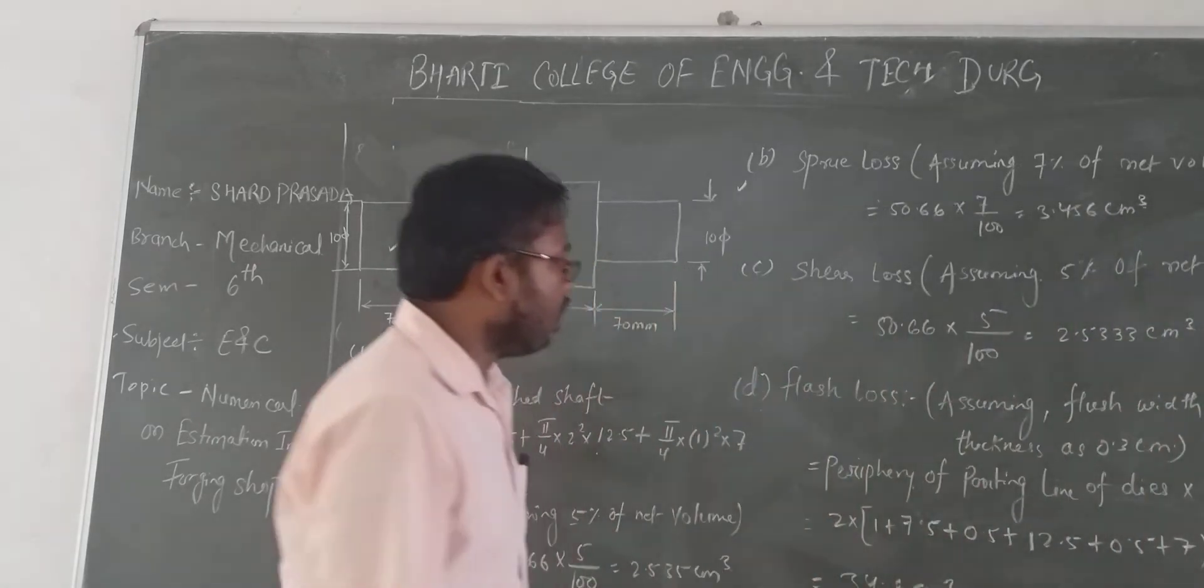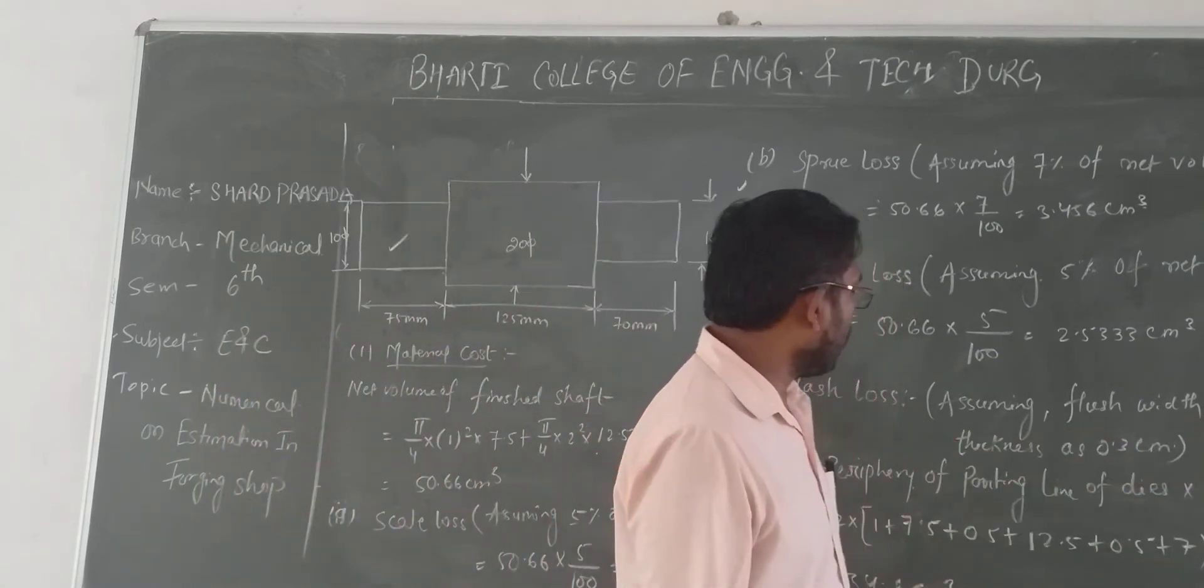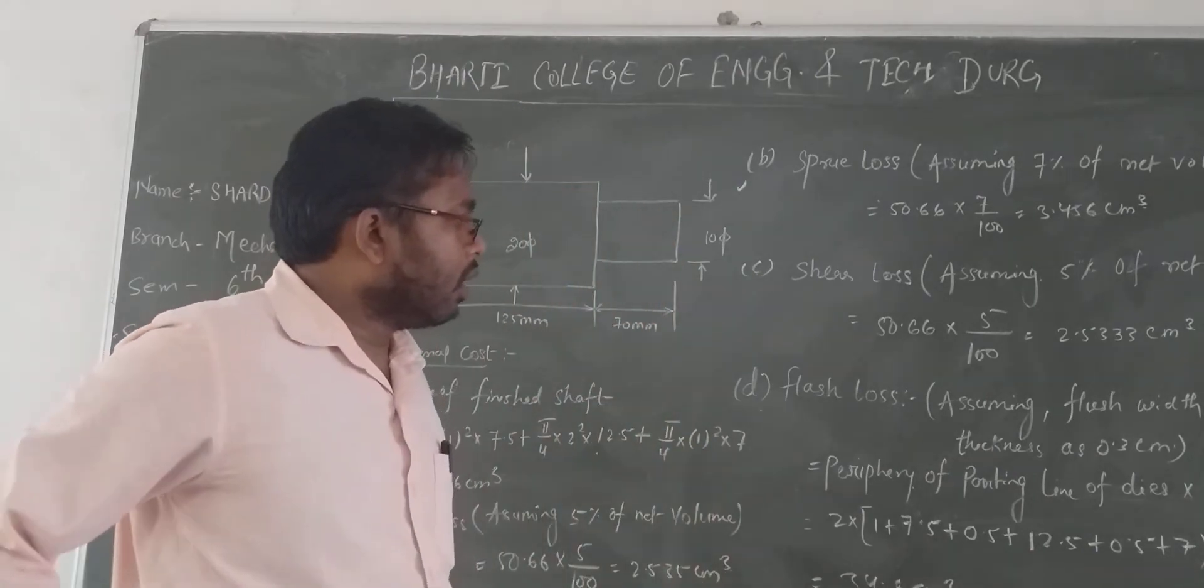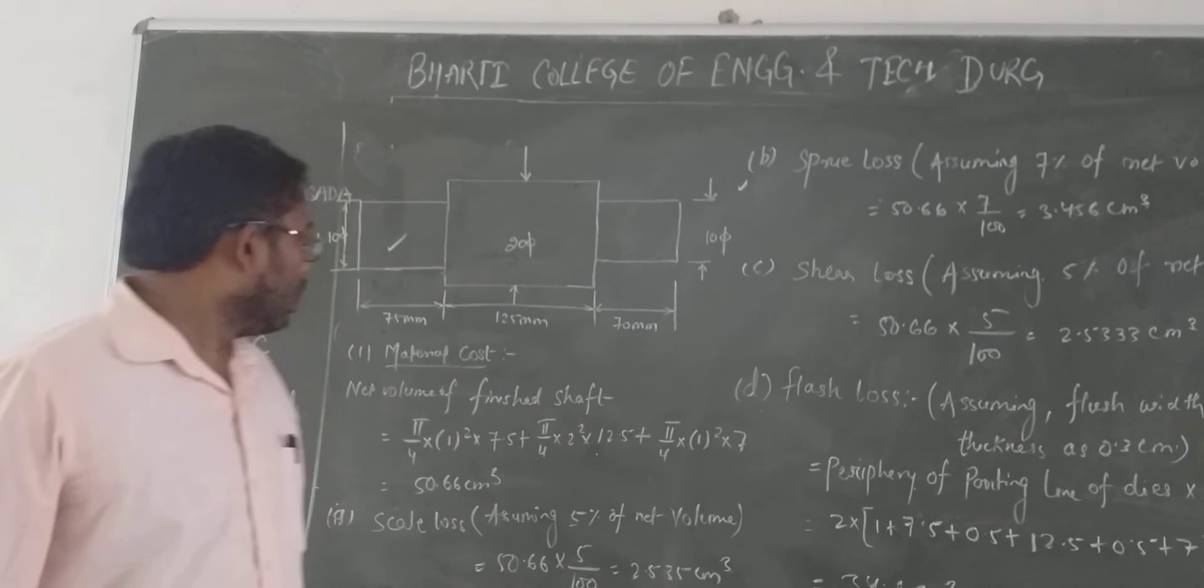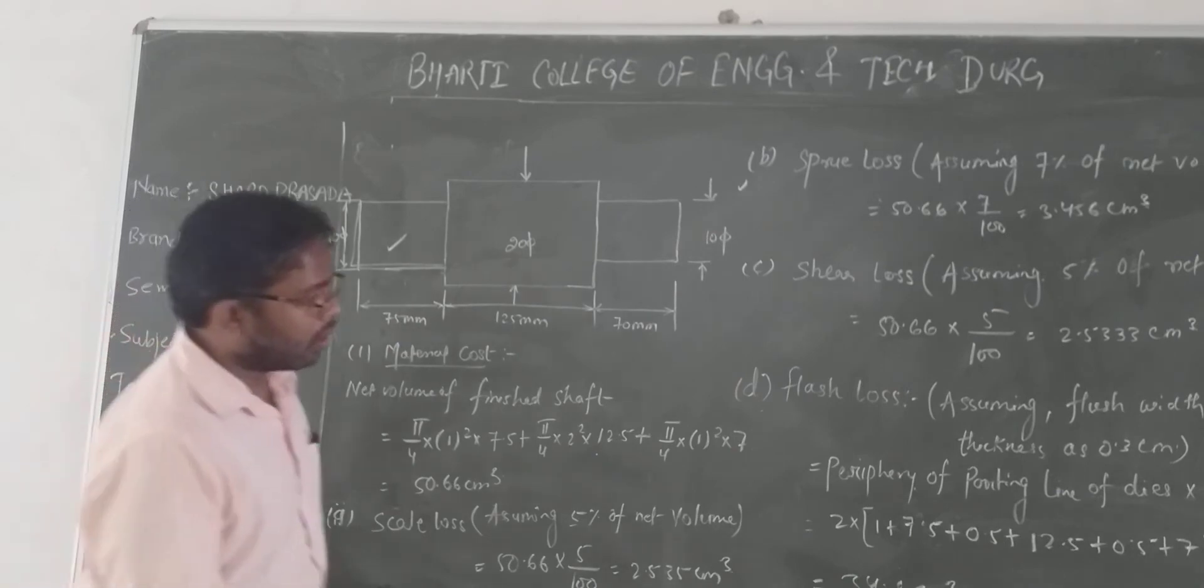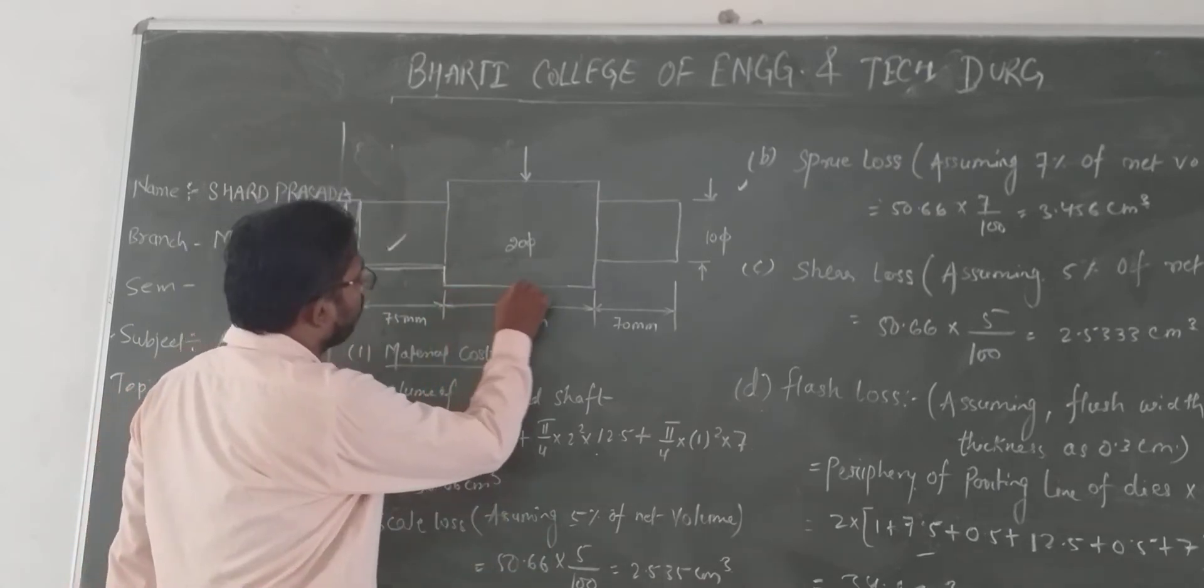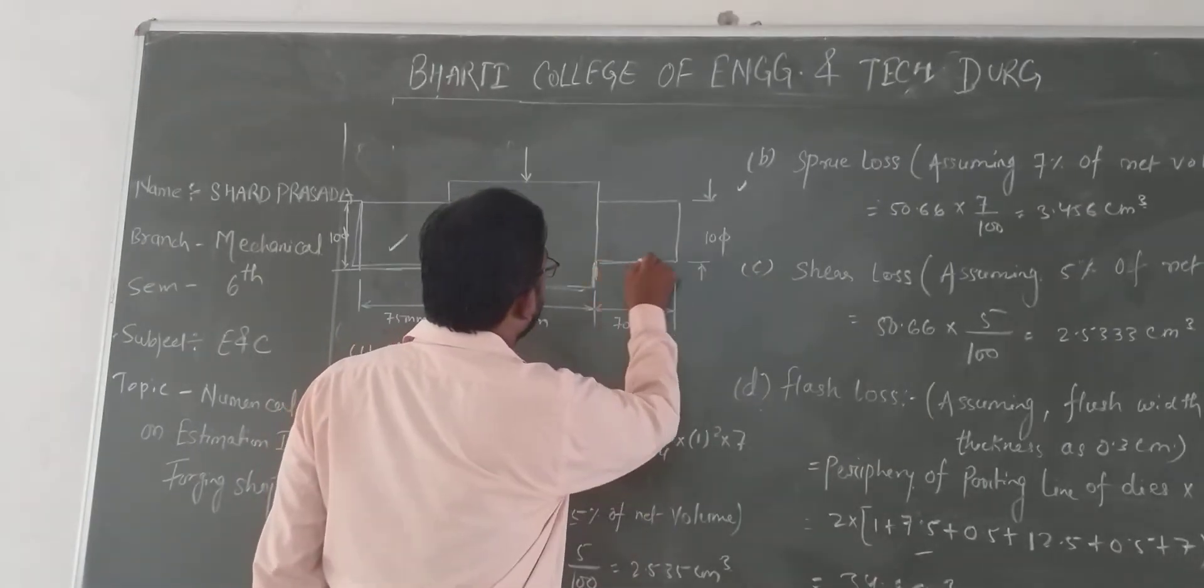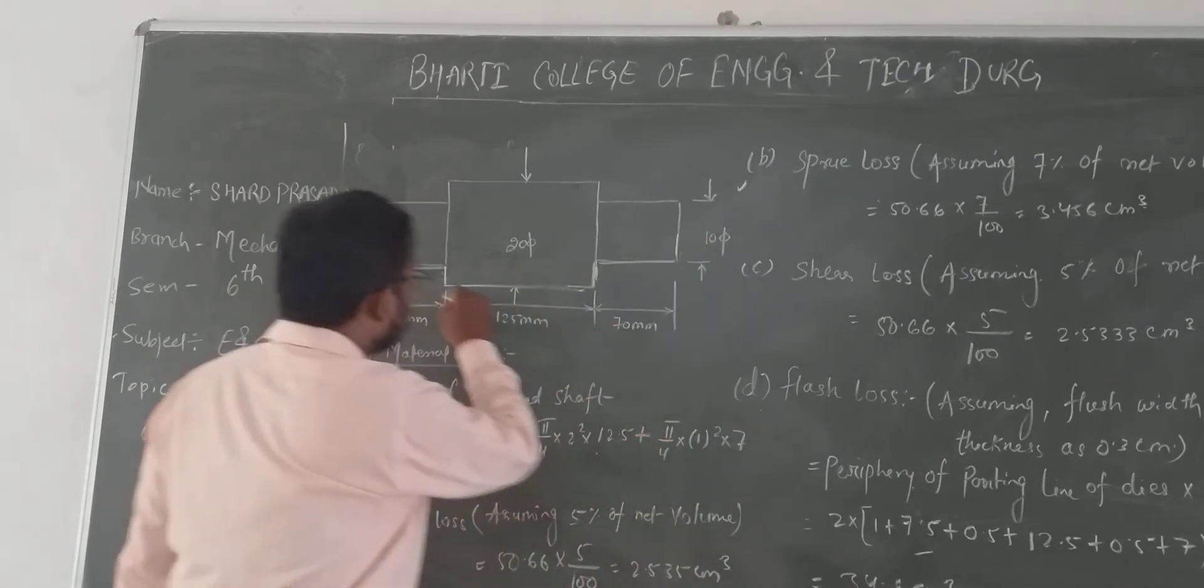The next item is flash loss. For flash loss, assume the flash width is 0.3 cm. So periphery of parting line dies: 2 × 0.3. This part is 7.5, this is 0.5.